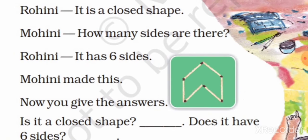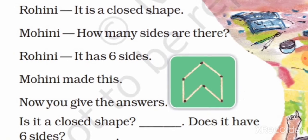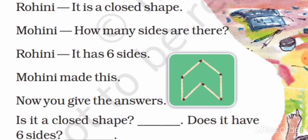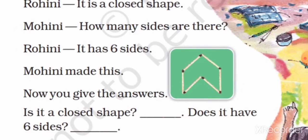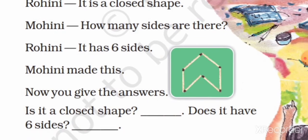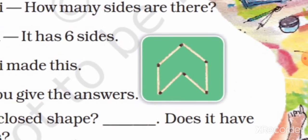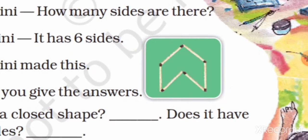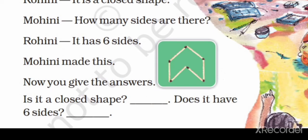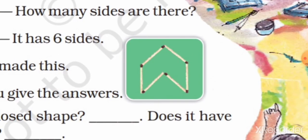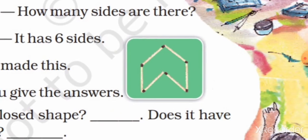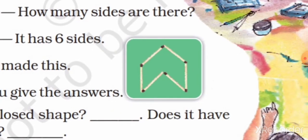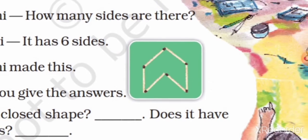Next, students, look at this shape — Mogini made this shape. Now you give the answers. It is a closed shape. Students, look at this shape — is it closed or open? Yes, closed. Does it have six sides? Students, look at this shape — one, two, three, four, five, six. There are six sides.